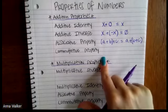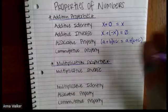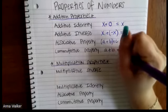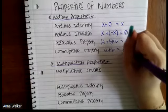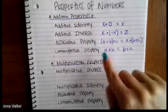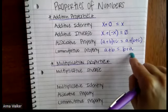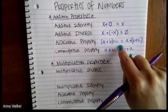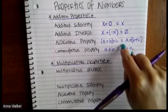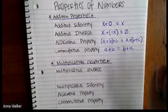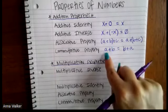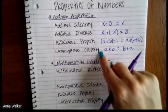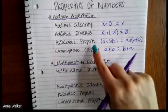The commutative property, on a similar path, says that we can add numbers in any order as well. So for instance, if I have A plus B, I could do A plus B or I could flip it — B plus A — and I get the same thing. Like two plus three is the same as three plus two. However, the same thing doesn't work with subtraction. Two minus three is not the same thing as three minus two — one of them is a positive number and one is a negative number. So these two properties only work for addition and multiplication.